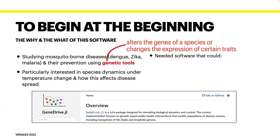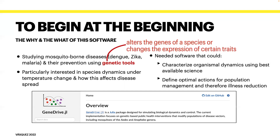What I sought in building this software was both a computational tool that could characterize organismal dynamics using the best available science and to help define the optimal means of vector population management and thus risk reduction from a human health perspective. At its core, this package is a population model defined over a network and designed to address these dual needs in my research.